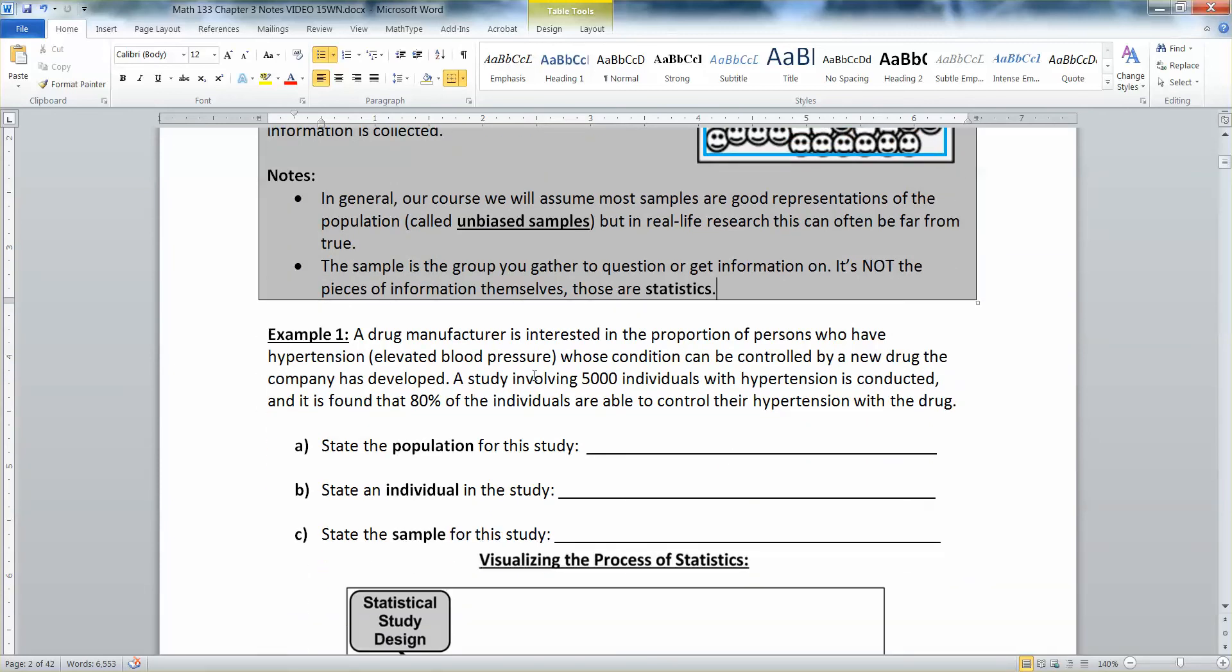Suppose we have a drug manufacturer that's interested in the proportion of persons who have hypertension, elevated blood pressure, whose condition can be controlled by the new drug the company has developed. A study involving 5,000 individuals with hypertension is conducted and has found that 80% of the individuals are able to control their drug with hypertension.